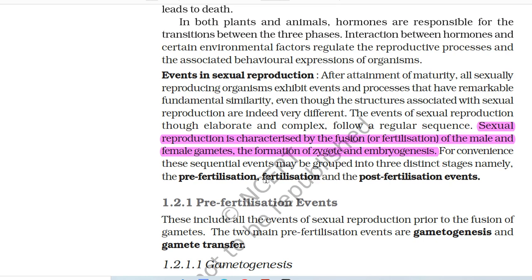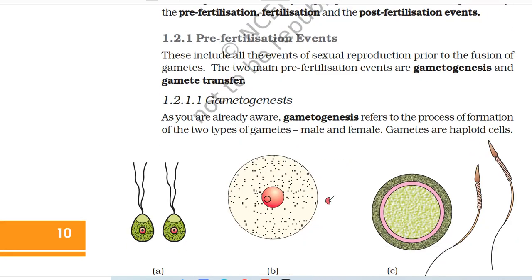Events in sexual reproduction: After attainment of maturity, all sexually reproducing organisms exhibit events and processes that have remarkable fundamental similarity, even though the structures associated with sexual reproduction are indeed very different. The events of sexual reproduction are characterized by the fusion or fertilization of the male and female gametes, the formation of zygote and embryogenesis. For convenience, these sequential events may be grouped into three distinct stages: the pre-fertilization, fertilization, and the post-fertilization events. Pre-fertilization events include all the events of sexual reproduction prior to the fusion of gametes. The two main pre-fertilization events are gametogenesis and gamete transfer.